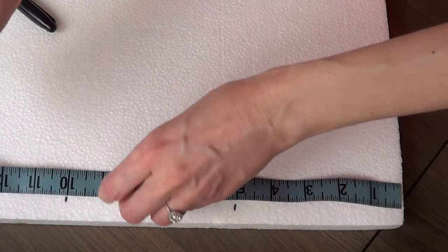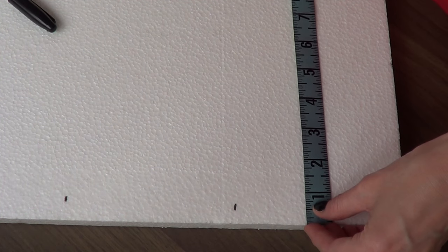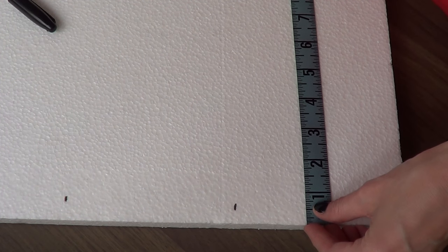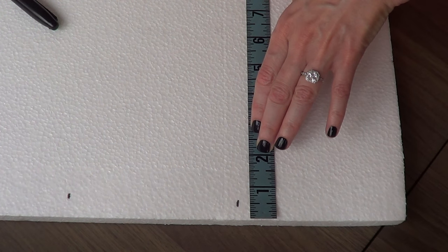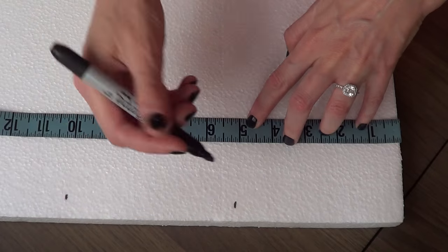First I'm going to mark five inches, then I'm going to mark another five inches. Then you can't see right here, but I marked I think it was ten inches. This part is pretty much optional, depends on the size you want to go for, but this is how big mine were.